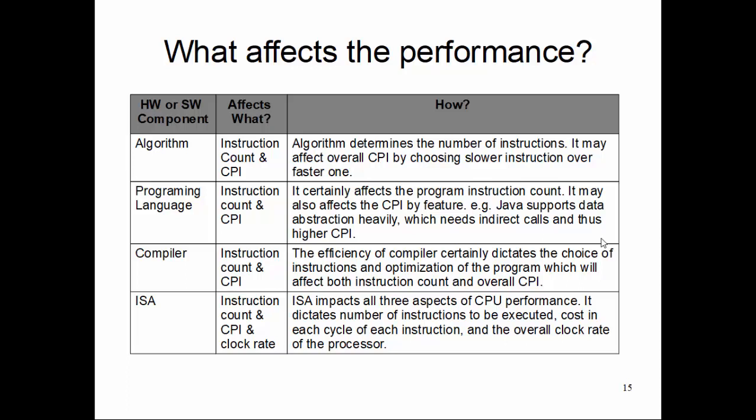Programming language also affects instruction count and CPI. Depending on whether you're doing Python versus Perl versus C or C++, it certainly affects the program instruction count. Remember, your high-level program ultimately boils down to low-level architecture instructions. Whether you're running Python, Java, C, or C++, it will be translated into machine code. So depending on programming language, it will affect the number of instructions you'll be executing through the program, and in turn will affect the CPI.